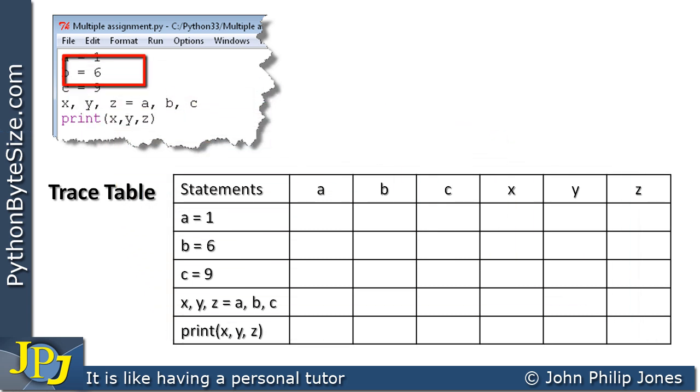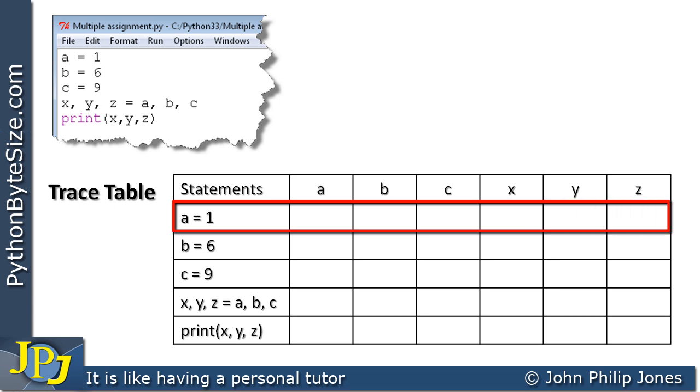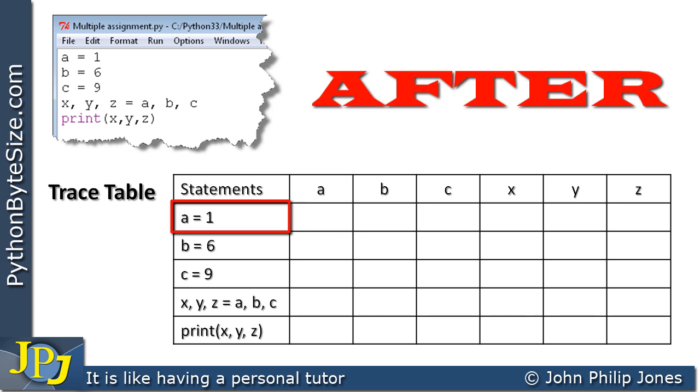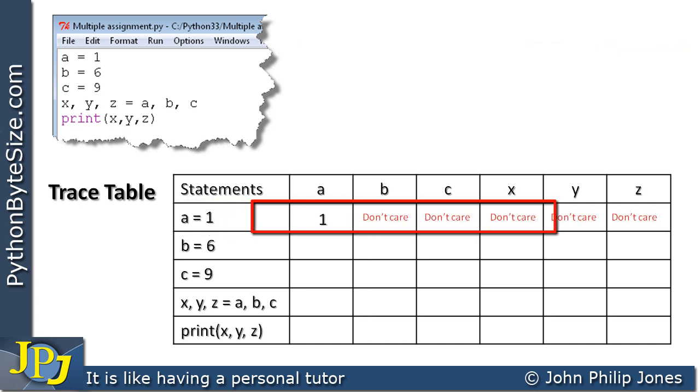Let's look at this statement here. A is assigned one, and that program statement appears here in the trace table. We're going to use this row to show the state of all the variables that occur in the program after a is assigned one has executed. I must stress that after it has executed. Here we can see the state of the variables, and we've put in this column one because a has been assigned one.